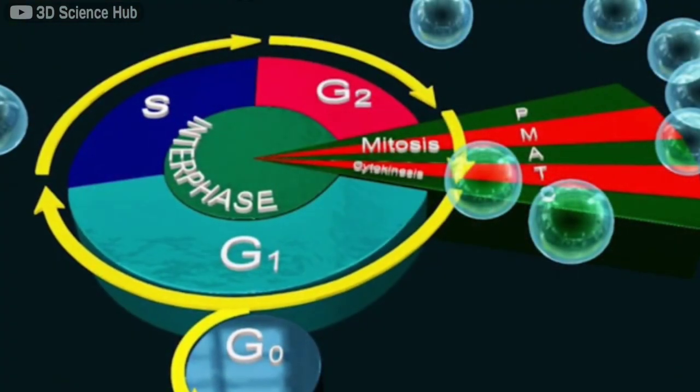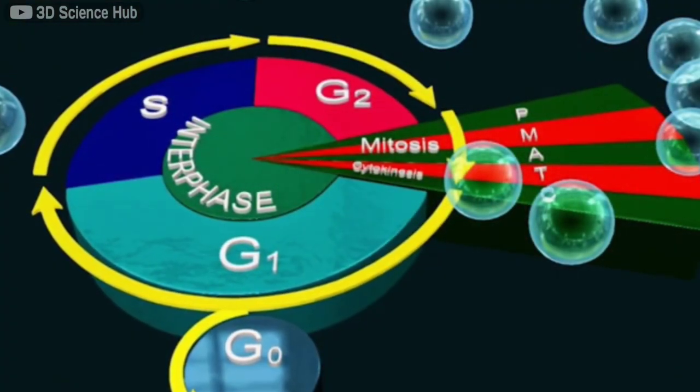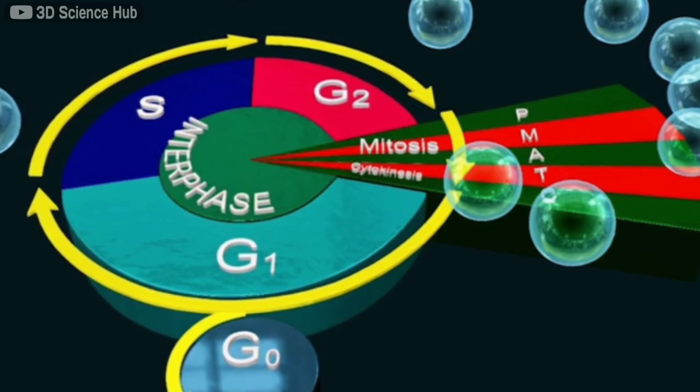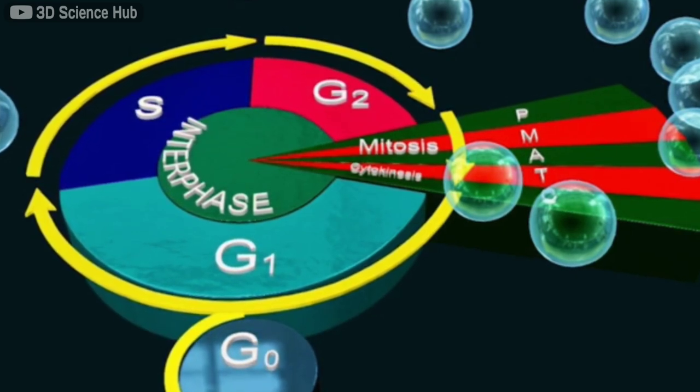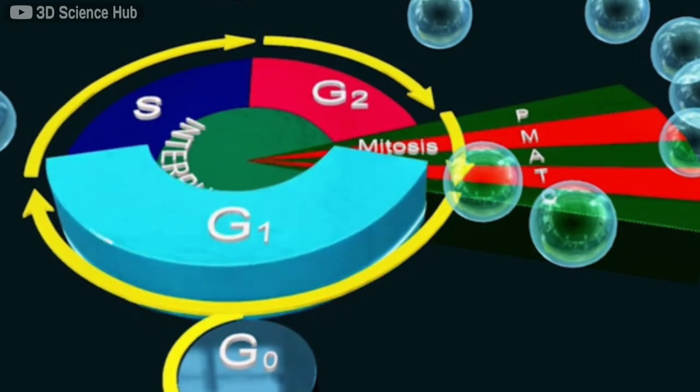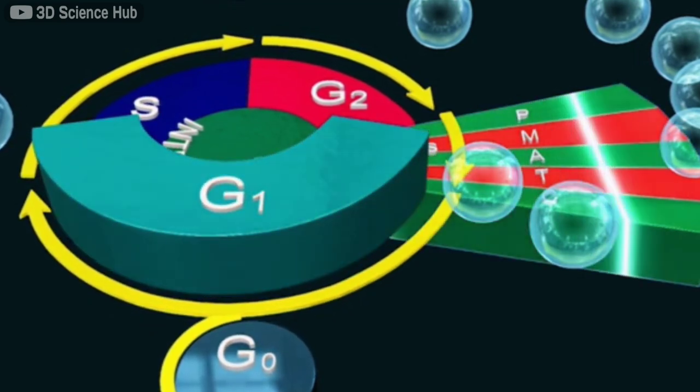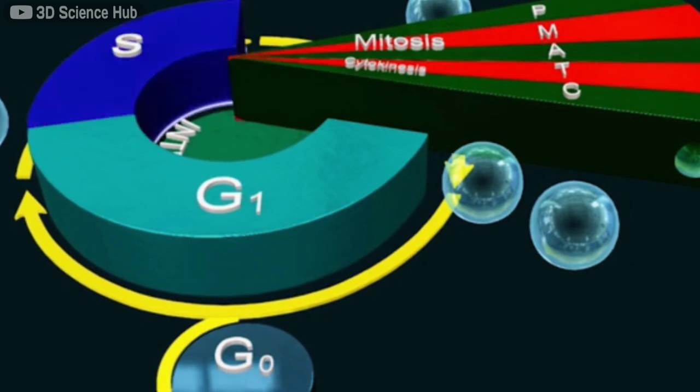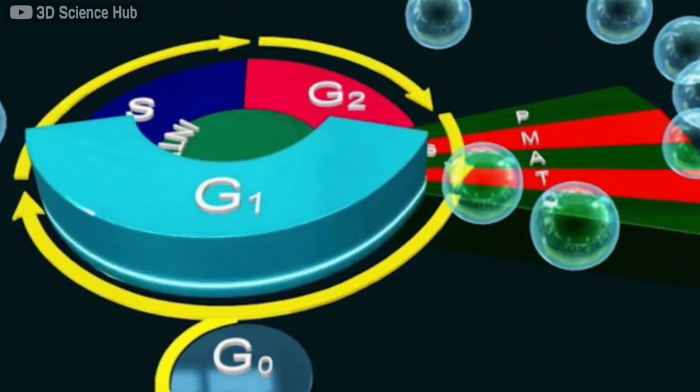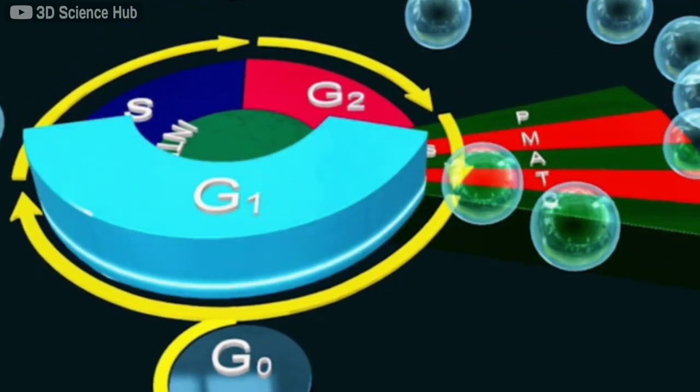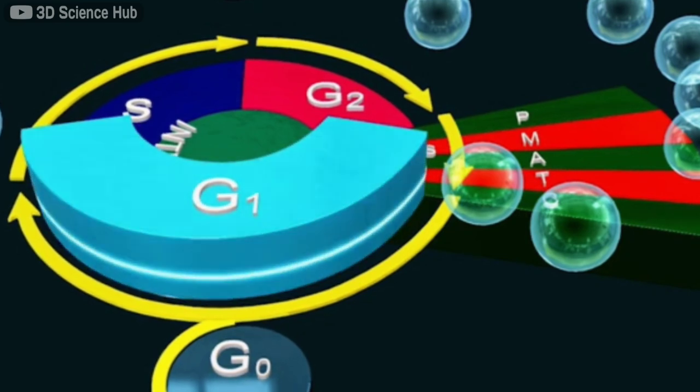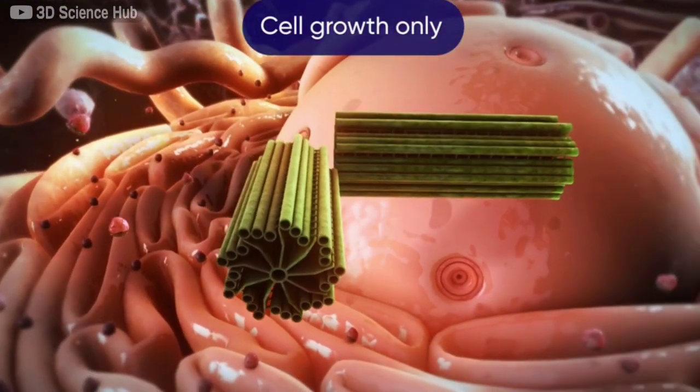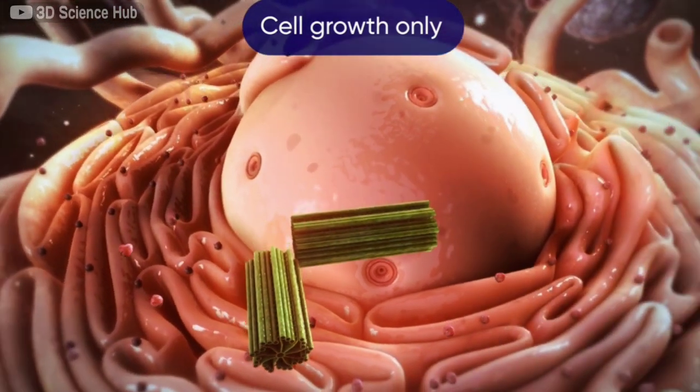Let us get back to the cell cycle. The first phase is called the G1 phase. It occurs between mitosis and DNA replication. It is the longest phase of the interphase and hence of all the cell cycles, taking around 40% of its duration.